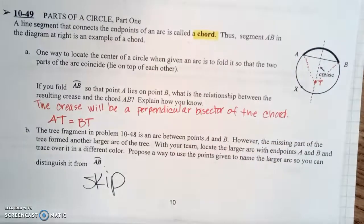One way to locate the center of a circle when given an arc is to fold it so that two parts of the arc coincide or lie on top of each other. If you fold AB so that point A lies on B, what is the relationship between the resulting crease and the chord AB? Explain how you know.